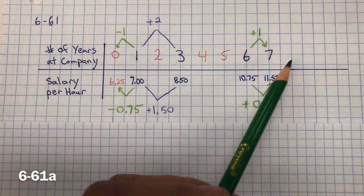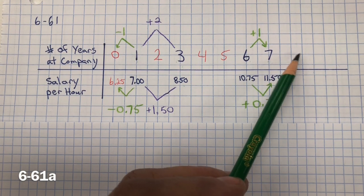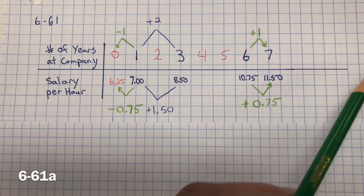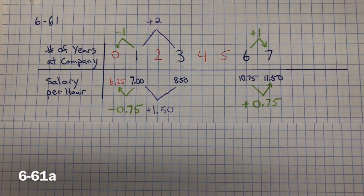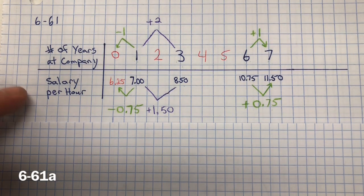So then I could just keep going on the number of years, 8 years, 9 years, 10 years, and so forth, and keep adding 75 cents to each of those years. And I would be able to find Hector's hourly wage.